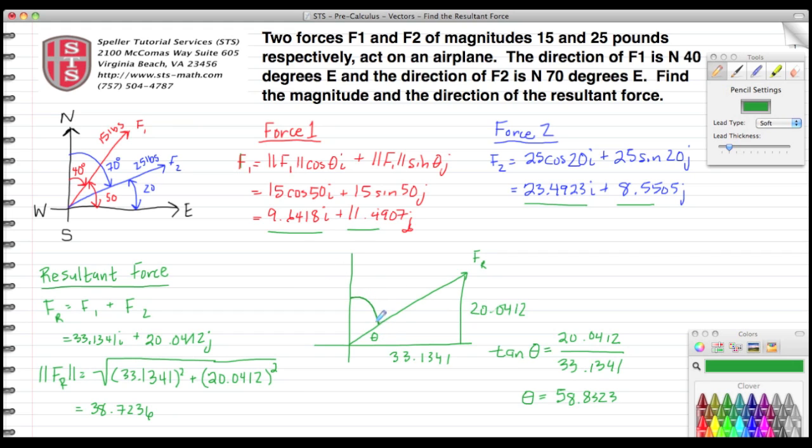And if I wanted to figure out what my bearing is, I have to go from north. So to figure out what that is, I want to take 90 minus theta, and that's going to give me 31.1677 degrees east.